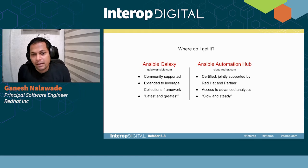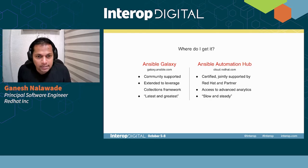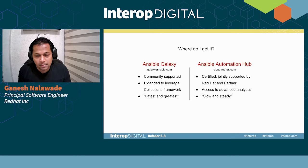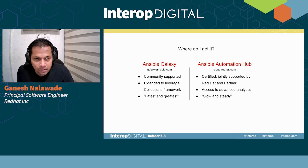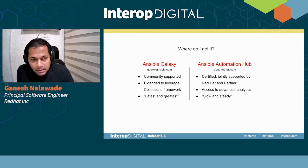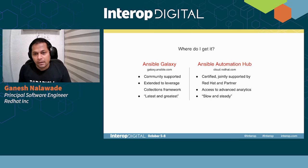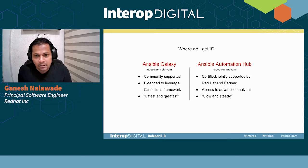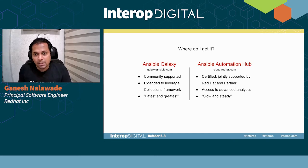Where can we get collections? When someone creates a collection, they can upload it to Ansible Galaxy, which already hosted roles and starting 2019 has also started hosting collections. All the latest code is part of Ansible Galaxy. When you get access to Automation Hub at cloud.redhat.com, these are certified collections by Red Hat and partners, you get access to advanced analytics, and they follow a slow and steady release process. You can consider collections on Ansible Galaxy as upstream and collections on Ansible Automation Hub as the downstream.